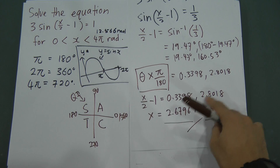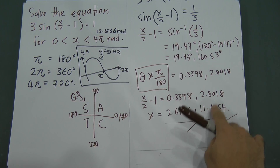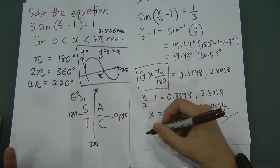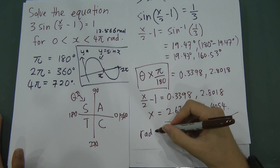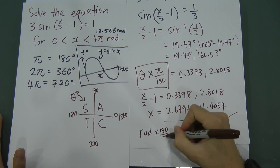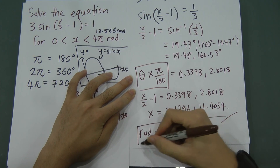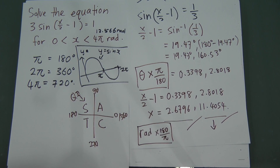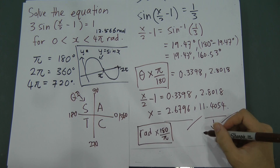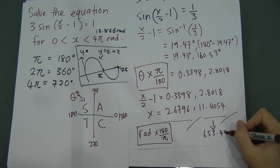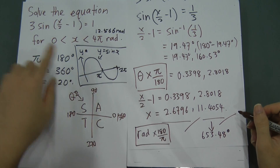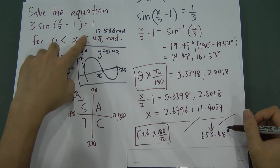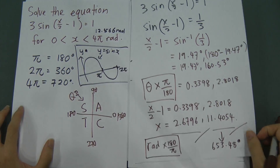To verify, if you convert 11.4054 radians back to degrees by multiplying by 180 over pi, you get 653.48 degrees. Since the range in degrees is 0 to 720, 653 degrees is still within range. So these two values are the correct answers.